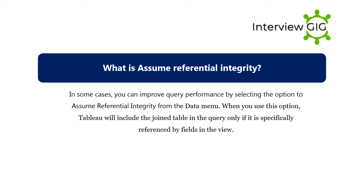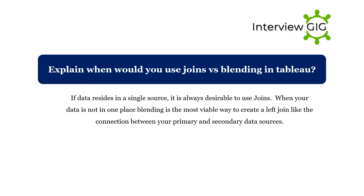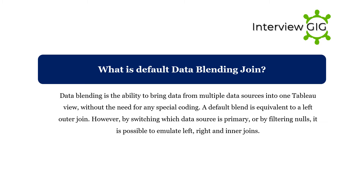When you use this option, Tableau will include the joined table in the query only if it is specifically referenced by fields in the view. When would you use joins versus blending in Tableau? If data resides in a single source, it is always desirable to use joins. When your data is not in one place, blending is the most viable way to create a left join-like connection between your primary and secondary data sources.